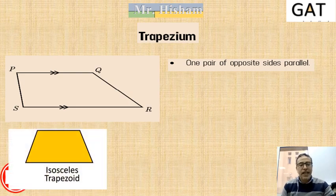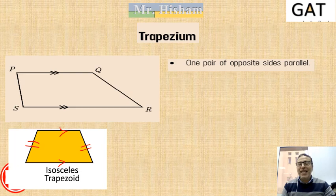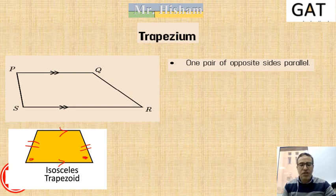In the case where I have two parallel sides and two equal sides — these two sides are equal and these two sides are parallel — it is an isosceles trapezium. What you need to know about the isosceles trapezium is that the base angles are equal and the two non-parallel sides are equal.